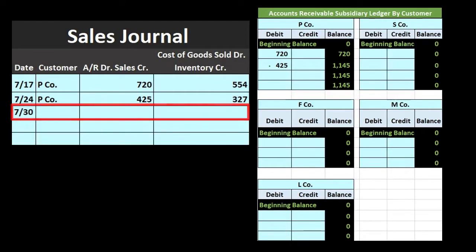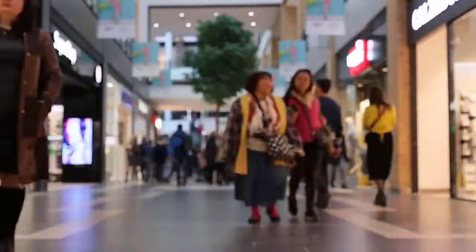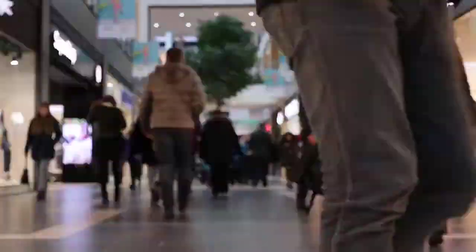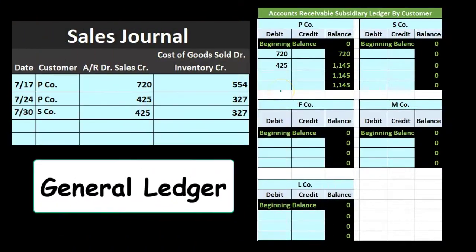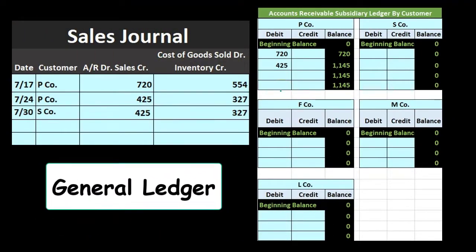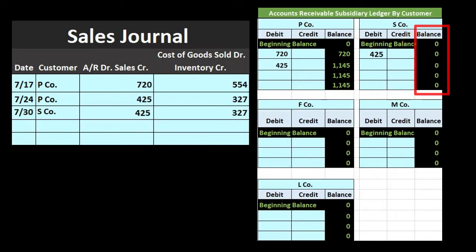Next transaction on 7/30: S Company, we sold 425, cost also 327 — same transaction, just a new customer. We're going to post this not to the general ledger but to the subsidiary ledger; we will post to the general ledger at the end once we sum up this column. So we post over here to S Company in the accounts receivable subsidiary ledger, bringing the zero balance up by 425 to 425.